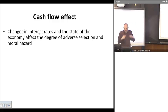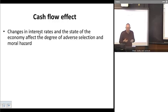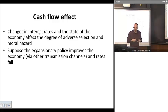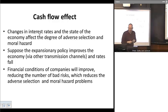Now, the important thing here, and so let's now get back to the monetary policy discussion, is that changes in interest rates and changes in the overall state of the economy affect the degree of adverse selection and affect the degree of moral hazard. And now let's go back to our expansionary monetary policy, and let's suppose that, via some of the other channels we've already talked about, the economy starts to get better and interest rates fall.